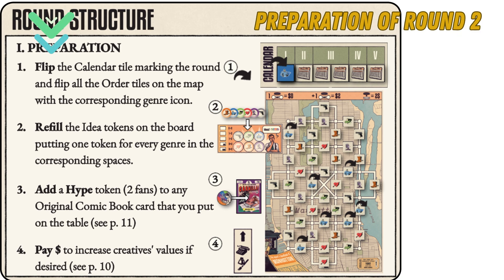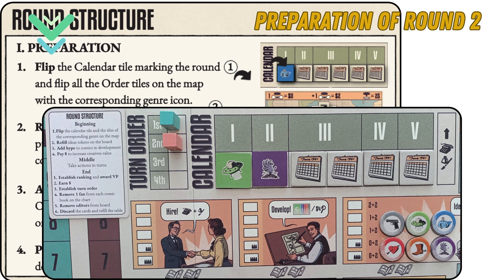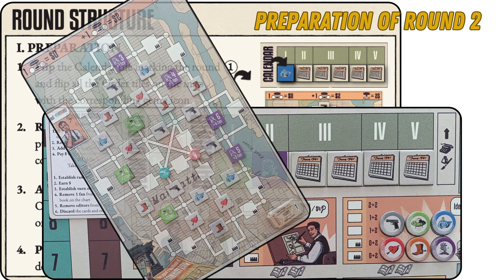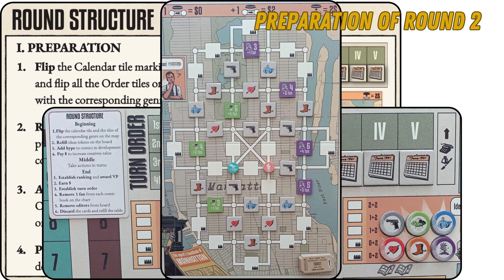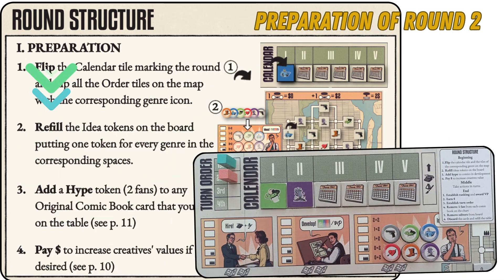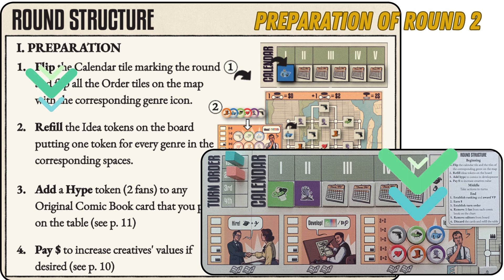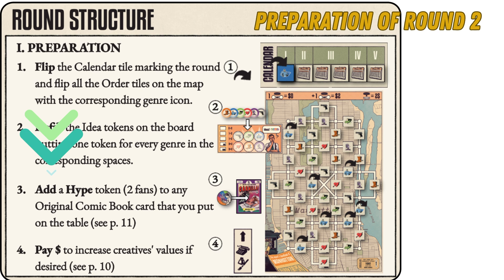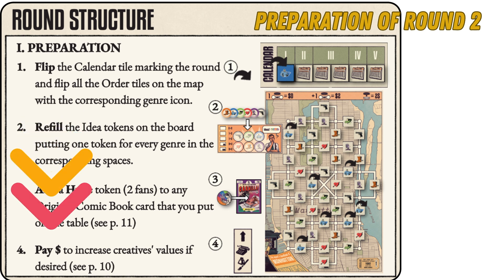Preparation of round two — phase one. Step one: flip the calendar tile marking the round and flip all the sales order tiles on the map with the corresponding genre icon. Here we can see consumer tastes and preferences have changed, and horror is growing in popularity in certain areas of Manhattan. Step two: refill the idea tokens on the board, putting one token for every genre in the corresponding spaces. Step three: add a hype token to any original comic book card on the table. However, Firm A and B have not yet unlocked the special action to do this.